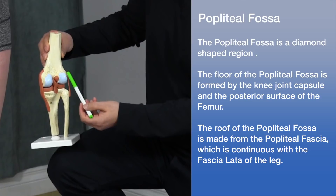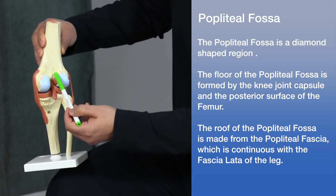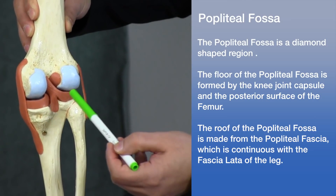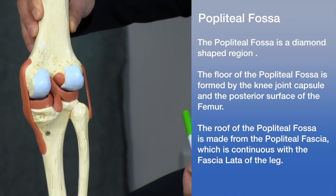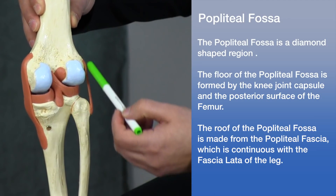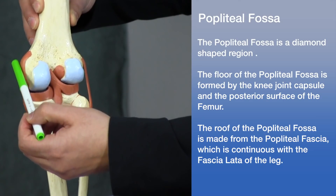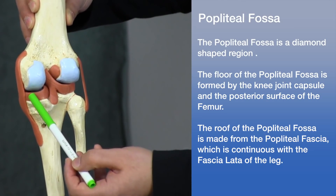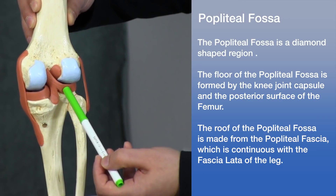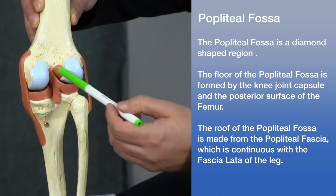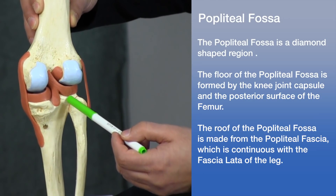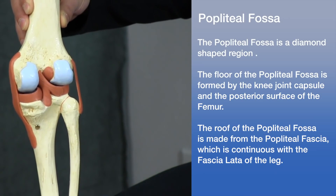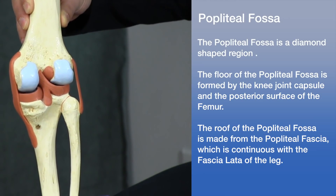The osseous structures would be the femur, the tibia, and fibula. The deeper ligamentous structures would be the lateral collateral ligament, the medial collateral ligament, the posterior aspect of the medial and lateral menisci. We also have the posterior meniscofemoral ligament and deep to that the PCL, or posterior cruciate ligament.